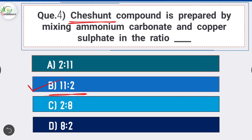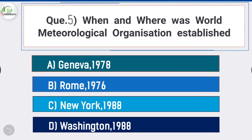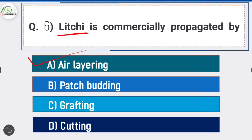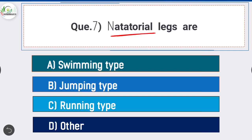Question number five: when and where was World Meteorological Organization established? Answer is option A - Geneva in 1978. World Meteorological Organization was established in Geneva in 1978. Question number six: litchi is commercially propagated by - answer is option A - air layering. Litchi is commercially propagated by air layering.